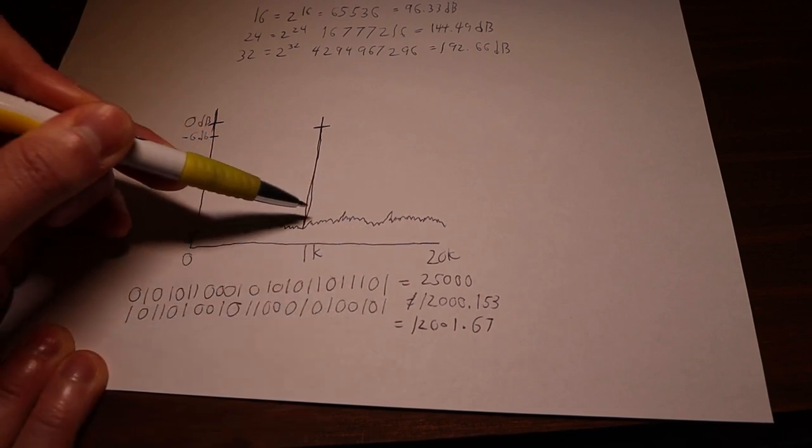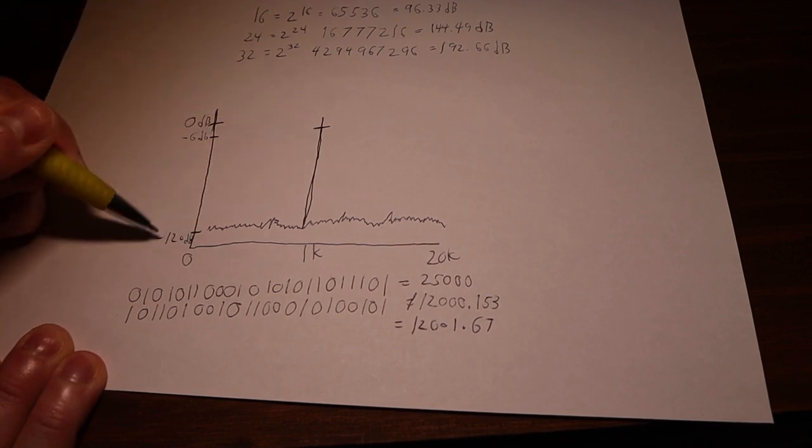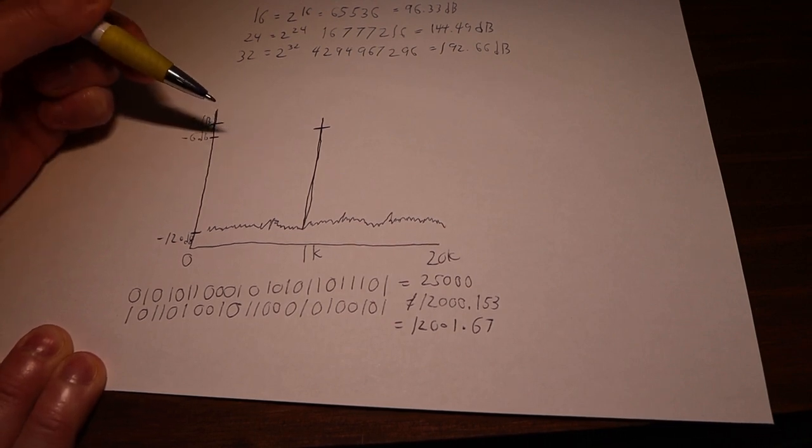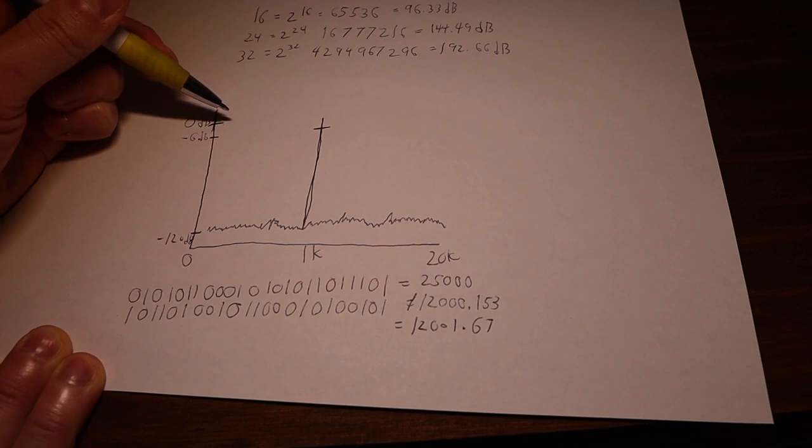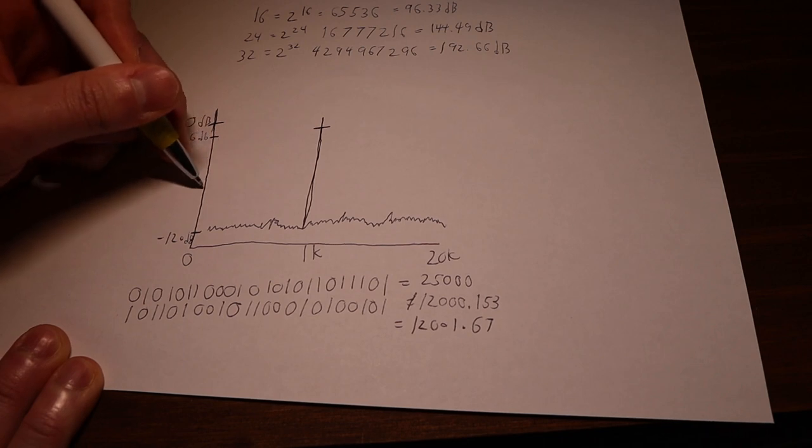So the actual noise itself does not go down any, but our signal goes down. So now our noise is still at, let's say, negative 20 dB, just for simplicity's sake, but our signal is now at negative 6. So our 120 dynamic range signal has now gone down to 114.